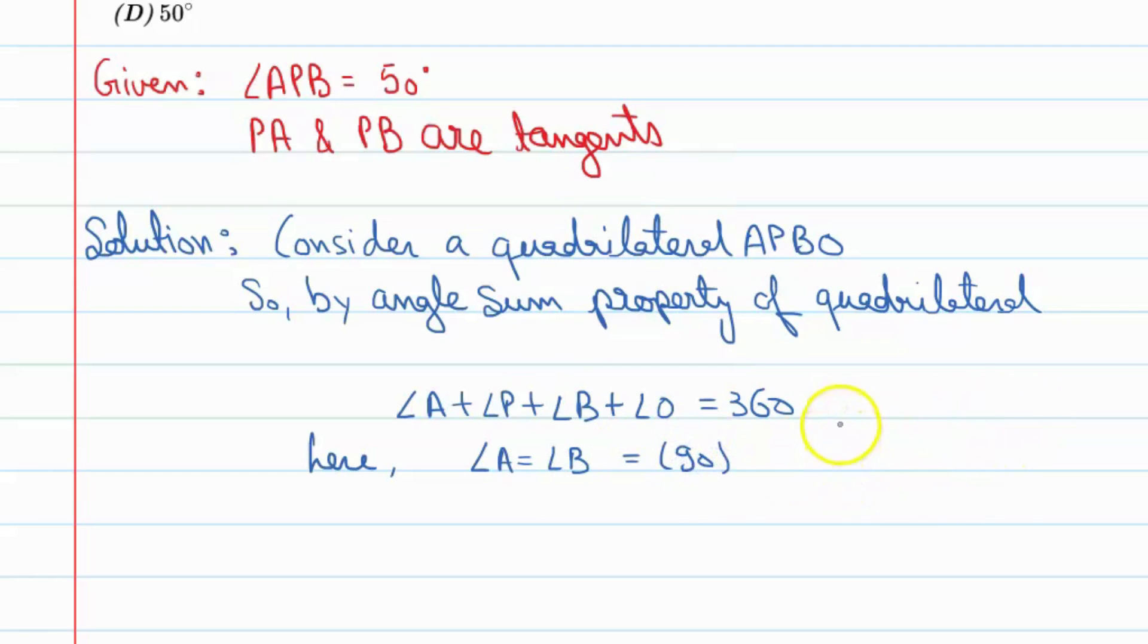OA and OB are equal. And these are radius. Radius and tangent... So radius and tangent... angle A and B... 90 plus 50 plus 90 plus angle O equal to 360.